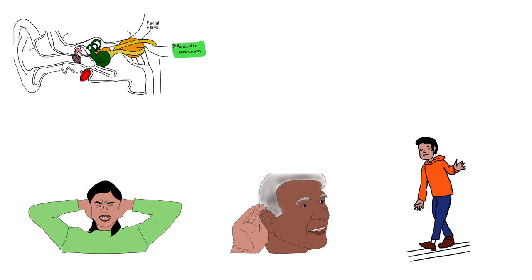Neurofibromatosis 2 can present with vestibular schwannomas or acoustic neuromas. These can be bilateral or unilateral and lead to symptoms like tinnitus, hearing difficulties, and balance problems. Neurofibromatosis type 2 is also associated with meningiomas.